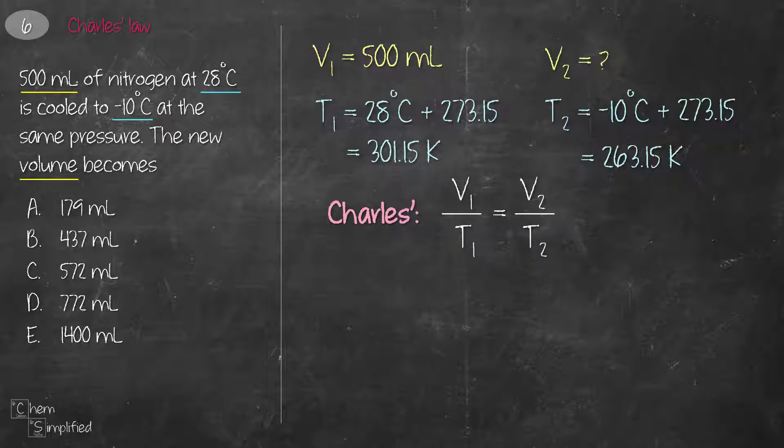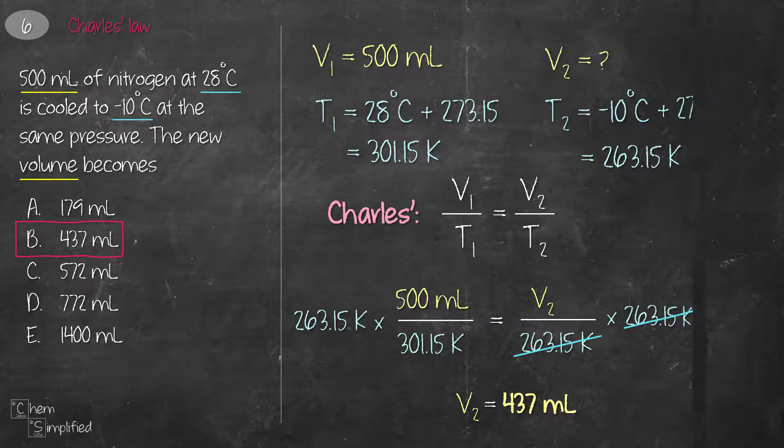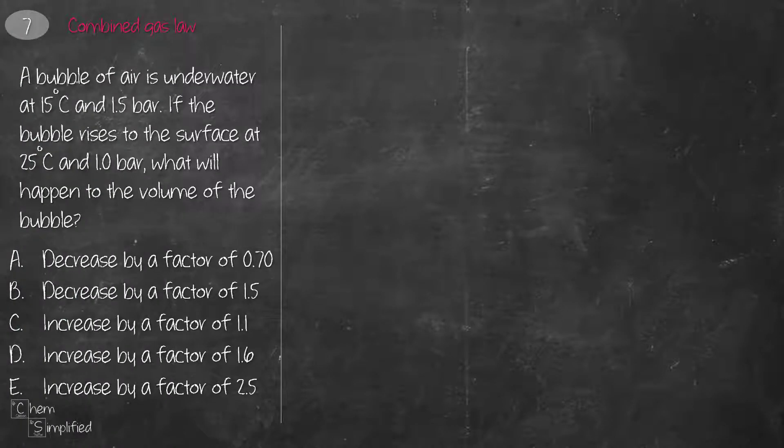The formula for Charles law is V1 over T1 equals V2 over T2, and we plug in all the values that we have. In order to solve for V2, we're going to multiply both sides with 263.15, giving us V2 is 437 ml.